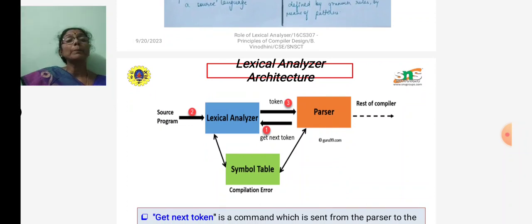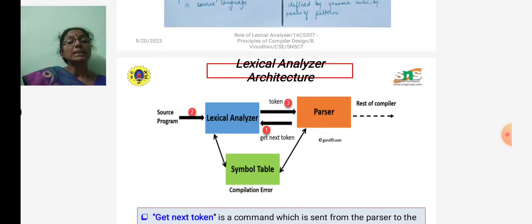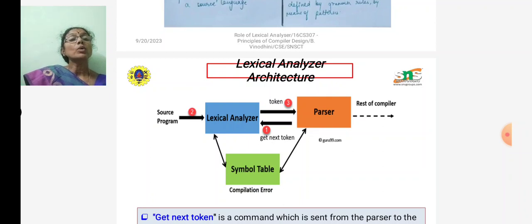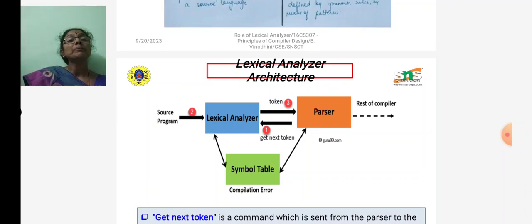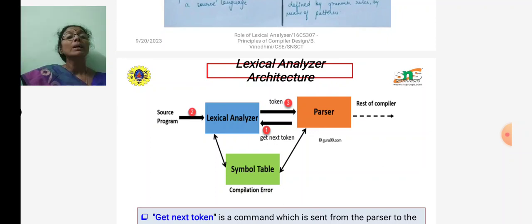This diagram shows the lexical analyzer architecture. The input to the lexical analyzer is the source program. It reads the source program from left to right, identifies and generates tokens, and that token is the output passed to the parser. When the parser needs a token, it sends a 'get next token' command to the lexical analyzer. If a token is requested, the lexical analyzer generates it again. This is how the source program is converted into tokens and then into a parse.